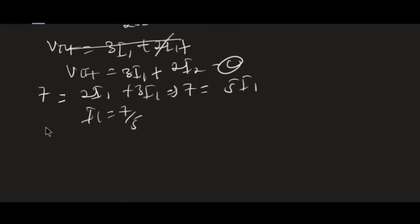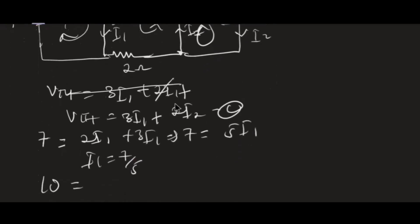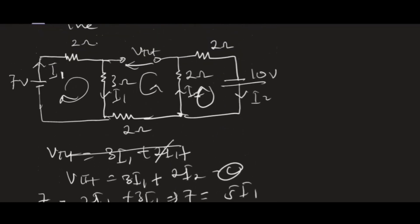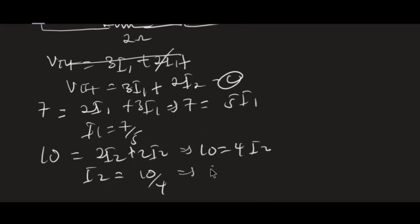To find I2, I take the right-side loop. The total voltage is 10 volts, which equals: 2·I2 + 2·I2. So 10 = 4·I2, giving I2 = 10/4 = 5/2 amperes.